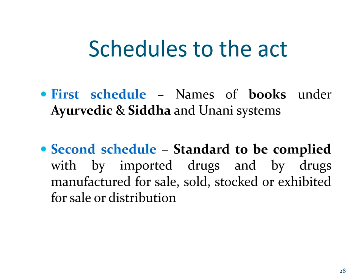I would like to wind up this section by mentioning the schedules to the DNC Act. The first schedule contains the names of the books under the Ayurvedic, Siddha, and Yunani systems, which are to be referred while making, labeling, or analyzing these formulations. The second schedule consists of standards to be complied with by imported drugs and by drugs manufactured for sale, sold, stocked, or exhibited for sale or distribution.